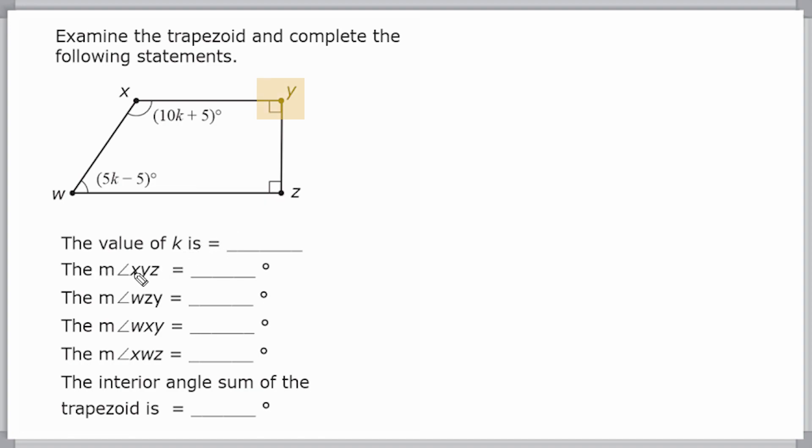So we can say the measure of angle xyz is equal to 90 degrees. As is this angle, angle wzy, that is also 90 degrees.